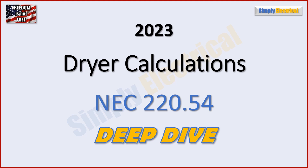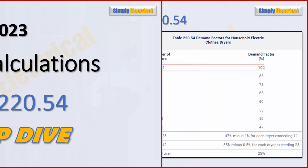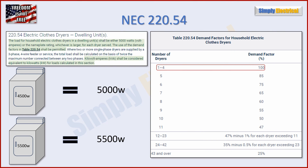This says 2023 because that's the current code cycle we're under. I'm recording this in 2024, but this video should be good for pretty much all generations of the code going back. So let's get started. We're going to look at 220.54, electric clothes dryers — dwelling units. It says the load for household electric clothes dryers in a dwelling unit shall be either 5,000 watts or the nameplate rating, whichever is larger, for each dryer served.